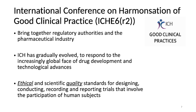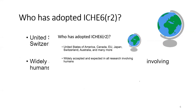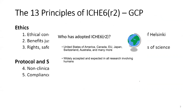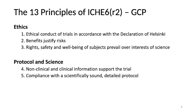ICH E6R2 is focused on the ethical and scientific quality standards for designing, conducting, recording, and reporting of trials that involve human subjects. Hundreds of countries have adopted this, and it is widely accepted and expected in all research involving human subjects. There are 13 core principles of ICH E6R2, and I'll go through each one of them now.